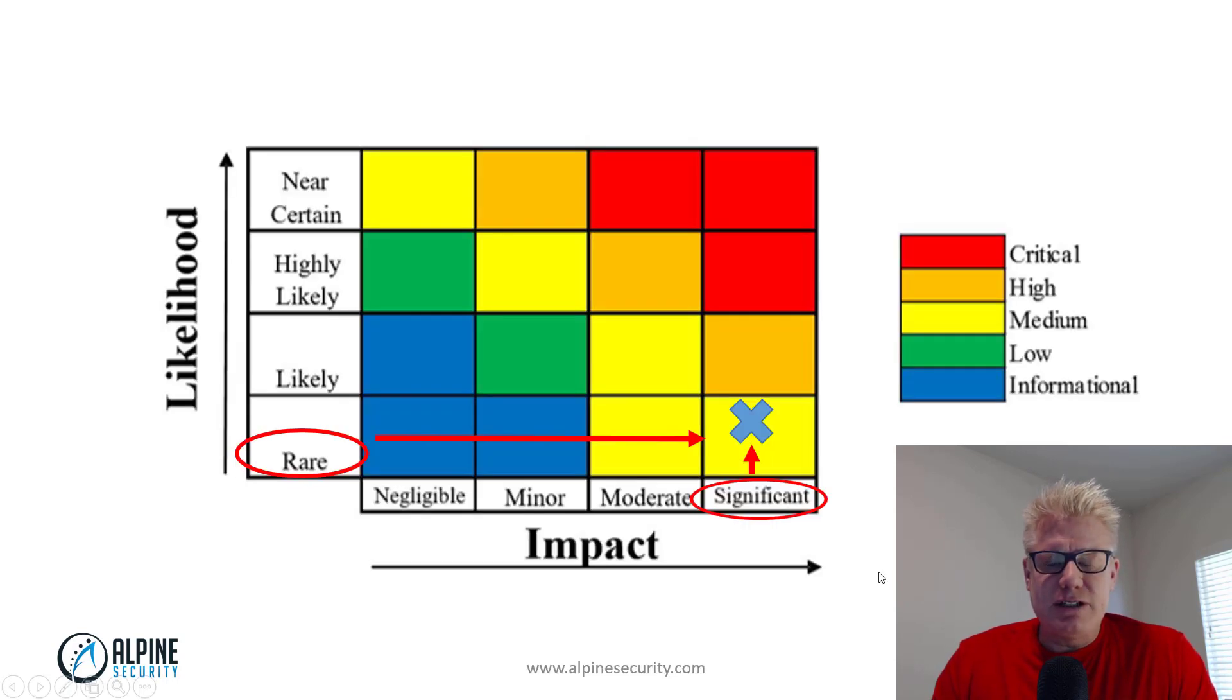For the risk matrix, it basically takes the things we showed in that cartoonish picture. It shows the likelihood and the impact and the intersection of those two. Again, another term for likelihood is probability. Another term for impact is consequence. In this scenario, we have a rare likelihood circle in red there. So it's not very likely that this thing will happen. And we have a significant impact, however, which is the highest rating on this scale. Risk matrices like this can have different likelihood ratings and different impact ratings. This is just an example.